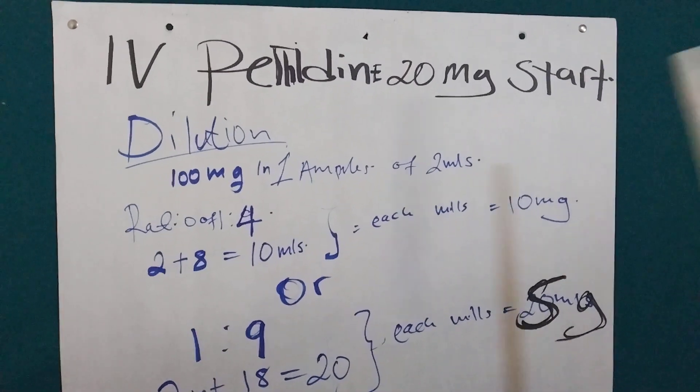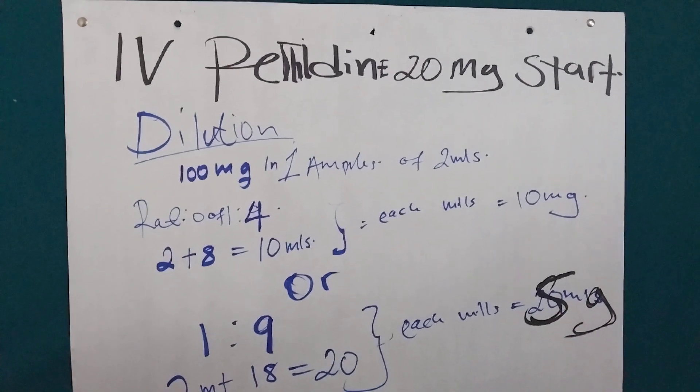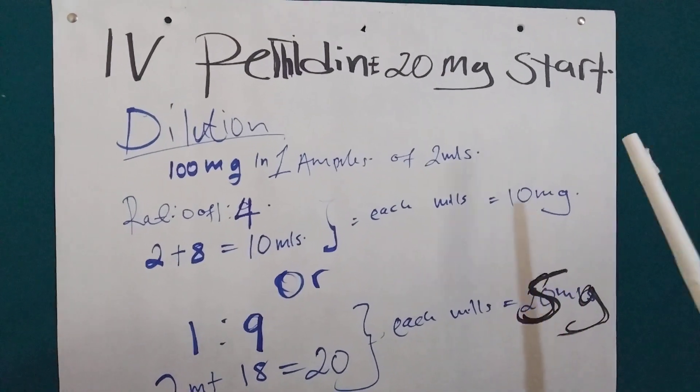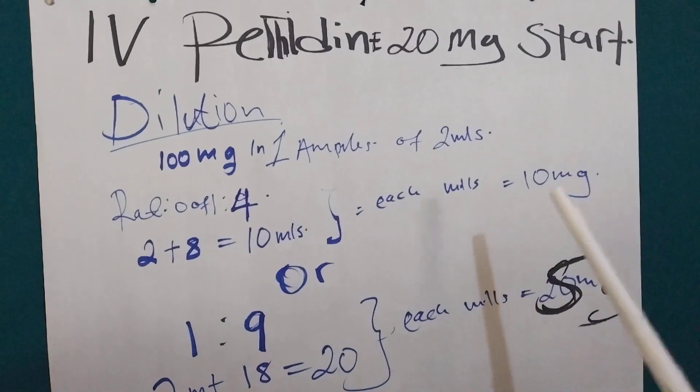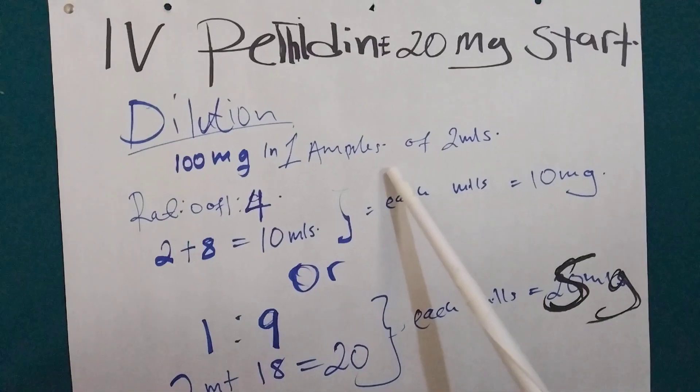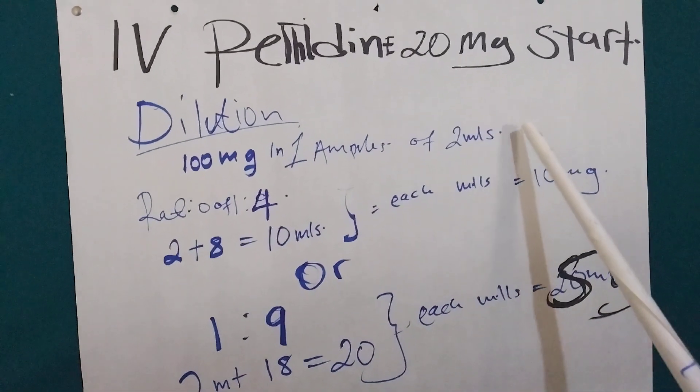I'm going to show you how we dilute and give the prescribed milligram. So, on dilution, we first check the ampoule. The one we have, one ampoule contains 100 milligrams in 2 mL.